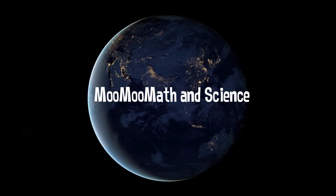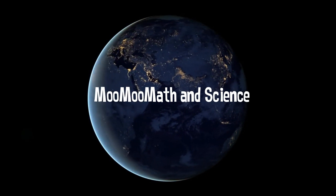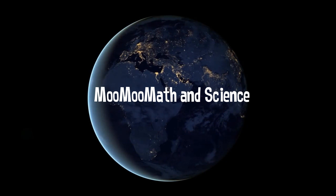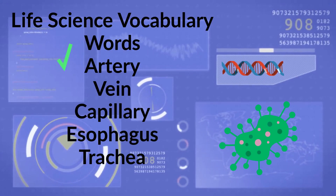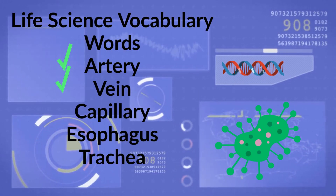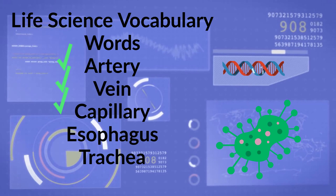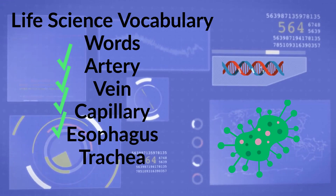Welcome to Moo Moo Math and Science. In this video you will learn the following life science vocabulary words: Artery, Vein, Capillary, Esophagus, Trachea.